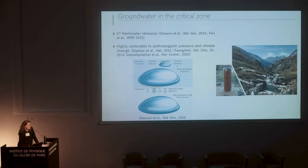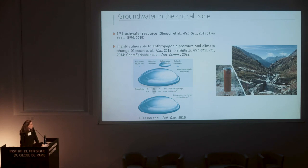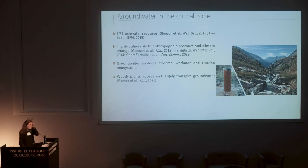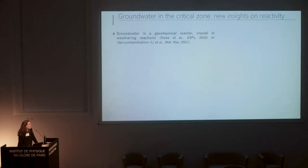As you know, groundwater is a crucial resource. It's the biggest freshwater resource on earth, but it's threatened by anthropogenic pressure and climate change. Groundwater is not only used for us — it's also supporting many ecosystems such as wetlands, riverine ecosystems, and recent studies have shown that even wooded plants access and largely transpire from groundwater. Groundwater is not only a resource crucial in terms of quantity, but also for quality.